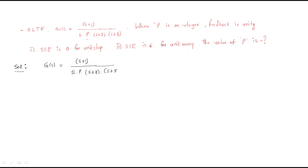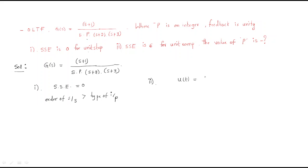The first condition is that steady-state error equals zero for unit step. You know that the error is zero when the order of the system is greater than the type of input — so that condition alone is not sufficient. Look at the second condition: steady-state error equals 6 for unit ramp.